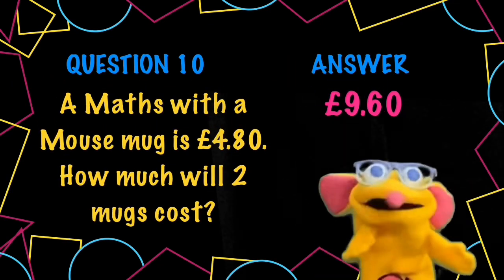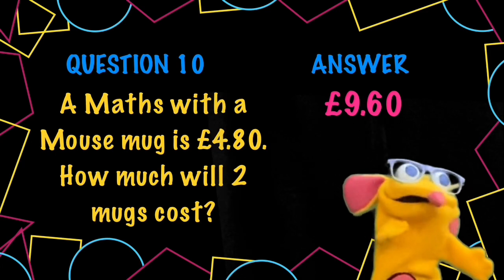If one mug is 4.80, two will be 9 pounds 60. You could double 5 pounds and then take away double 20p.